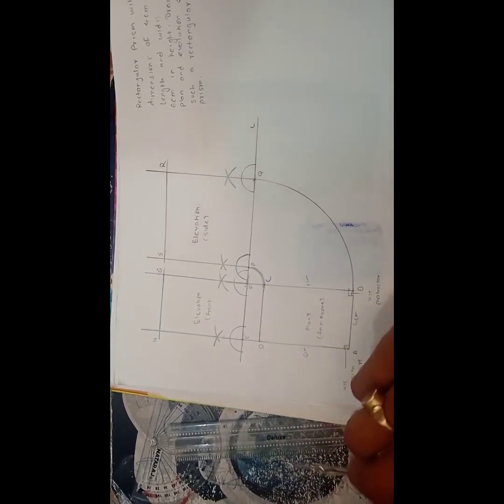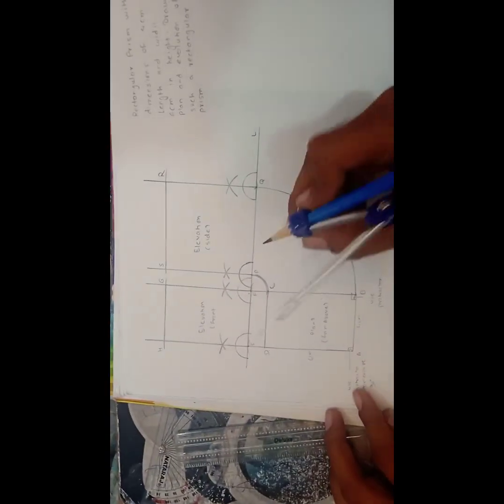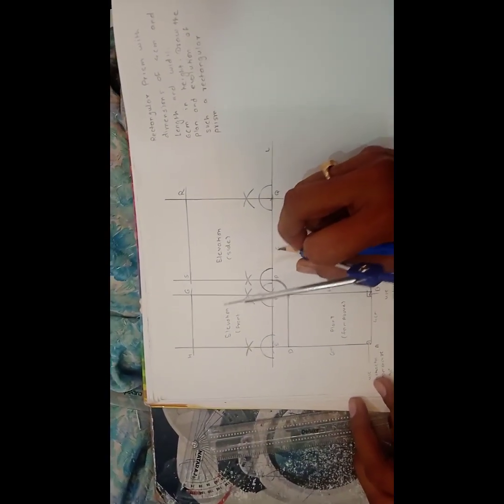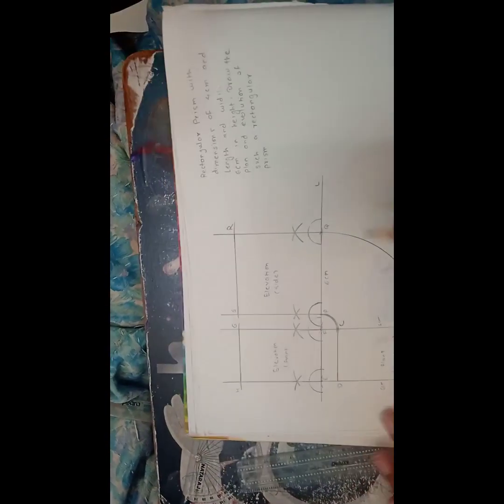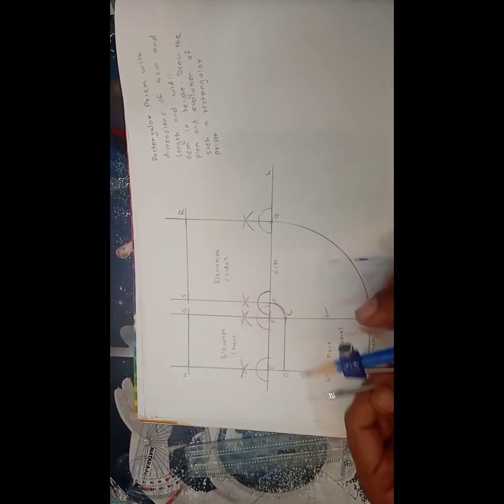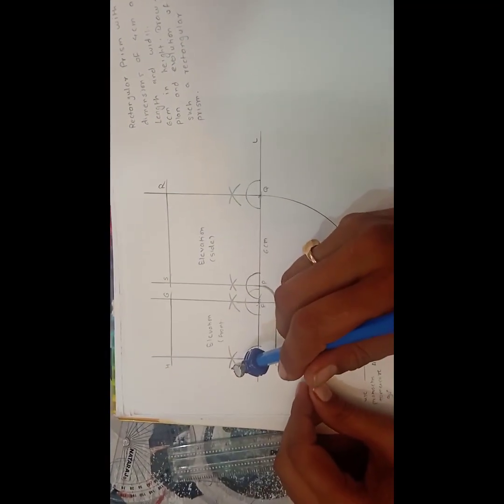So we have two arcs over here. Now this is the 6 cm. By taking the arc again we have this line PQ will be what, 6 cm. Now here we need to bisect the point from the EF.